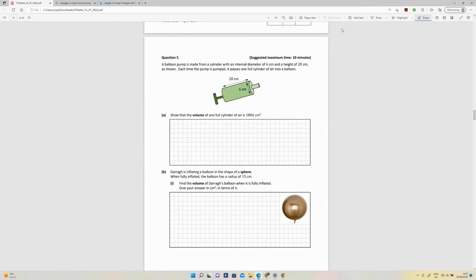Okay, question five. A balloon pump is made from a cylinder with an internal diameter of six centimeters and a height of 20 centimeters, as shown. Each time the pump is pumped, it passes one full cylinder of air into a balloon. Show that the volume of one full cylinder of air is 180π centimeters cubed.